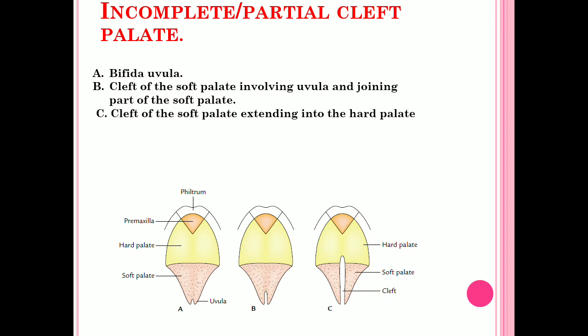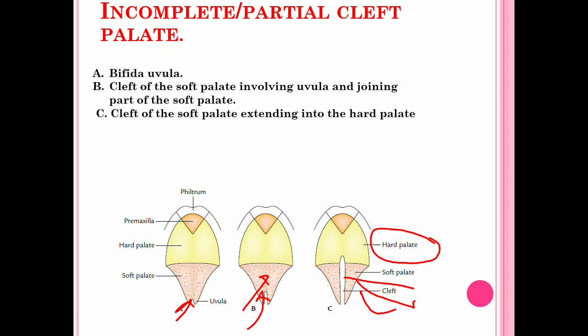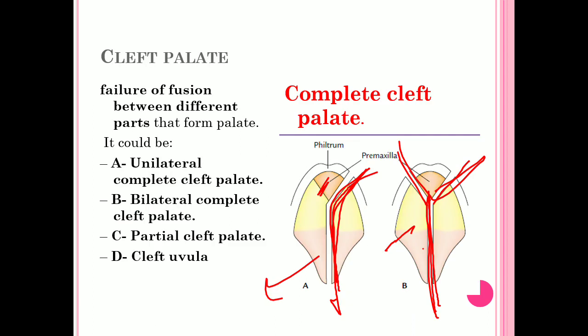Incomplete or partial cleft palate is when the cleft does not extend through the whole palate. Types include: bifid uvula (cleft limited to uvula), cleft involving the uvula and adjoining soft palate, and cleft extending through the uvula, soft palate, and slightly into the hard palate.